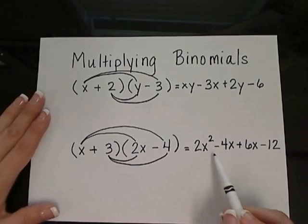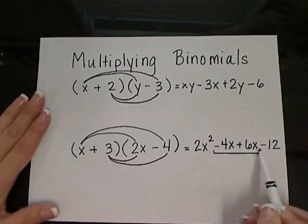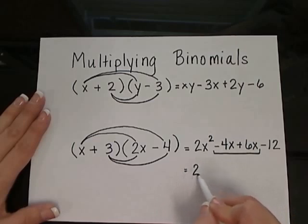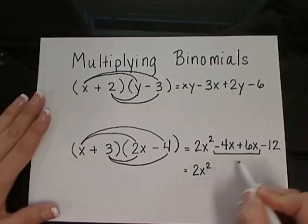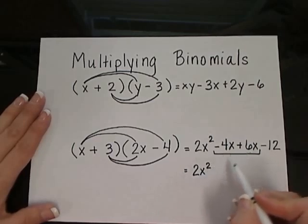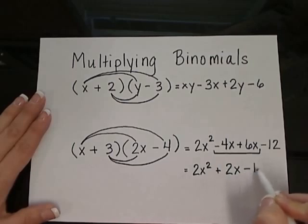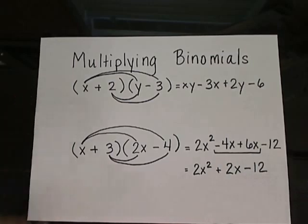Now we notice in this problem that the two terms in the middle are like terms, in that they have the same variable and the same exponent. So we're going to leave our 2x squared alone, and we're going to combine the minus 4x with the 6x. Minus 4 plus 6 would be positive 2x, and minus 12.